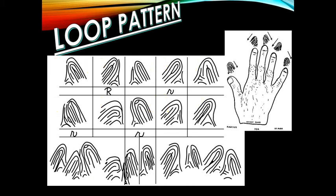On the first block, we can observe that the ridges run towards the ulnar bone, so this is considered as an ulnar loop. On the second block, the ridges tend to run towards the radius bone, so this is a radial loop. On the third block, the ridges run towards the ulnar bone, therefore this is an ulnar loop. On the fourth block, the ridges run towards the radius bone, so this is radial. And on the fifth block, the ridges tend to go towards the ulnar bone or the little finger, so this is the ulnar loop.